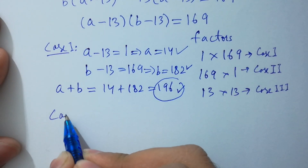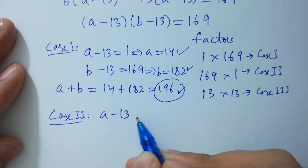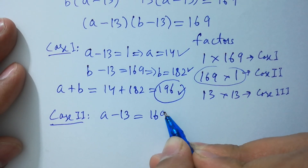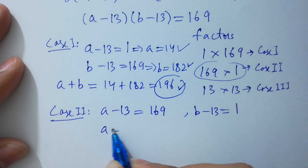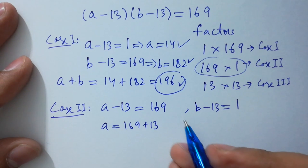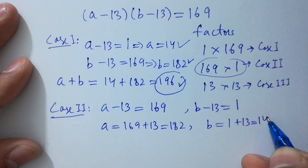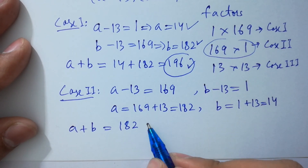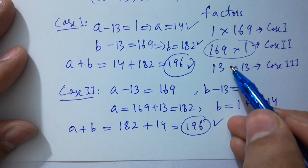Now take the second case, where a minus 13 equals 169 and b minus 13 equals 1. So a equals 169 plus 13 which is 182, and b equals 1 plus 13 which is 14. So a plus b equals 182 plus 14, and we get again 196.